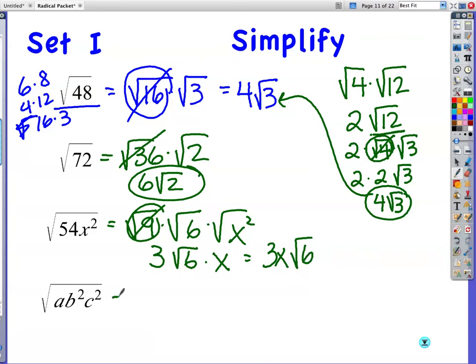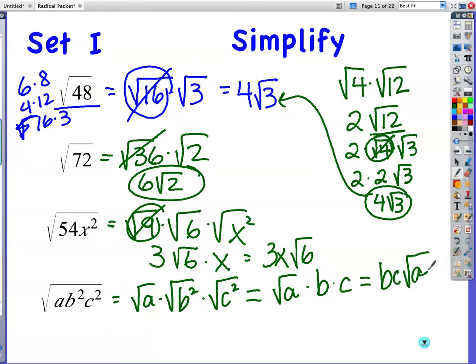I'm going to split this as well. Square root of a. Square root of b squared. Square root of c squared. So I have square root of a times b times c. But b and c have to come out front. bc square root of a.